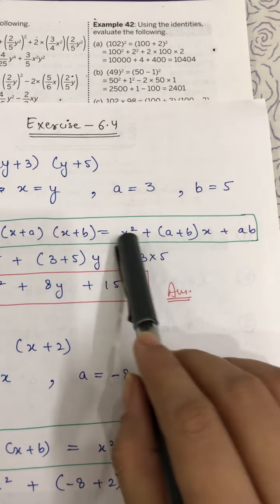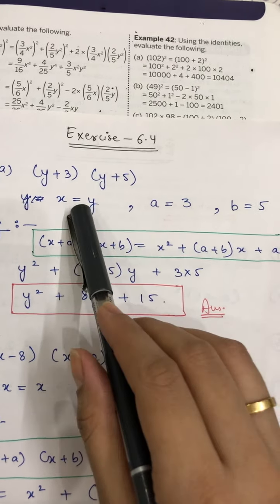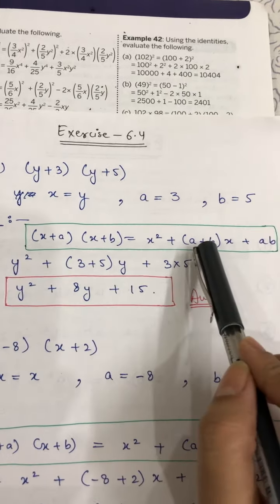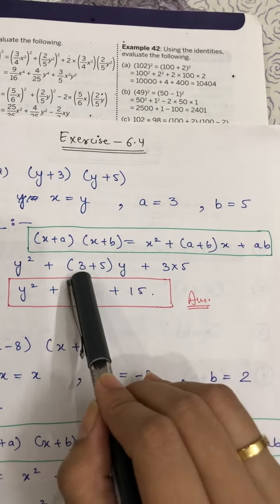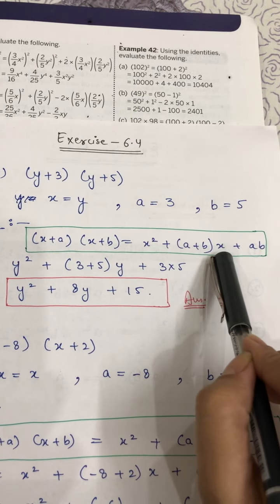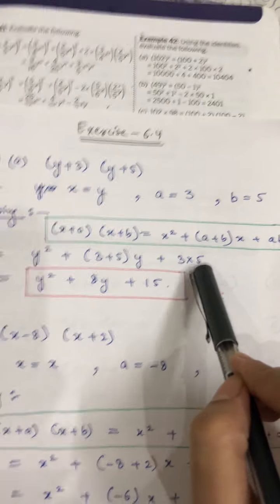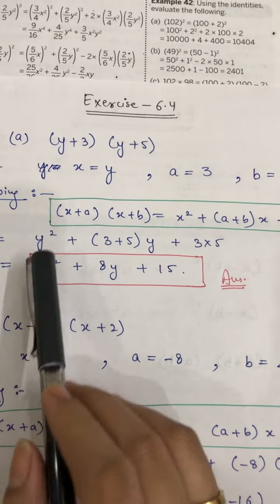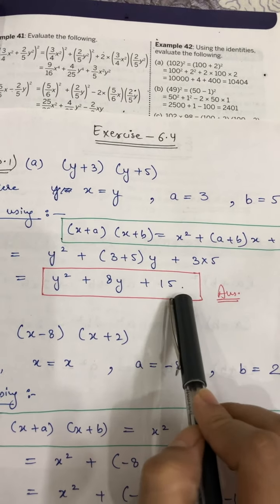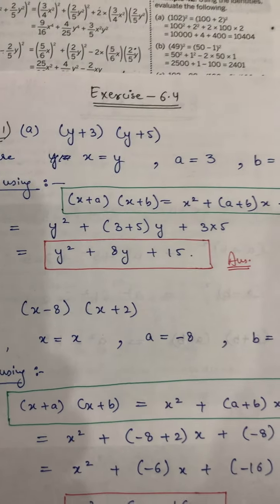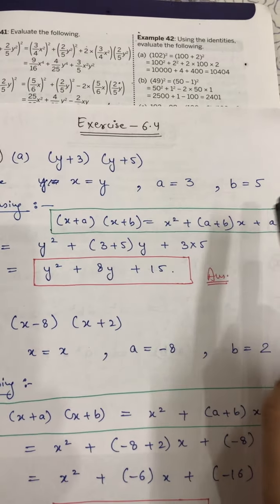Now put the values into the right-hand side. x² becomes y², a+b is 3+5 = 8 multiplied by x which is y, and a×b is 3×5 = 15. So the final answer is y² + 8y + 15. Remember to always mention which identity you are using in each question.